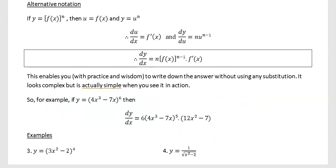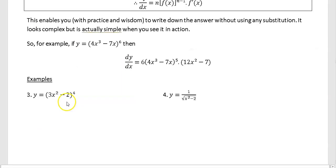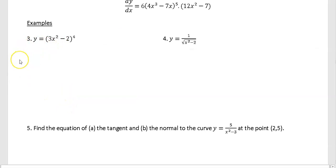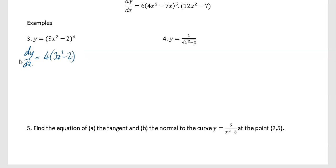Another way of saying all of this - instead of doing a chain rule - is differentiate with respect to the bracket and then differentiate the bracket. For example 3, for y equals 3x² minus 2 to the power of 4: differentiate with respect to the bracket, the power 4 comes down and multiplies, write down your bracket, and reduce the power by 1 to get power 3. Then differentiate inside the bracket: 3x² differentiated gives 6x. Multiply together: 4 times 6x is 24x, giving 24x upon 3x² minus 2 to the power of 3.